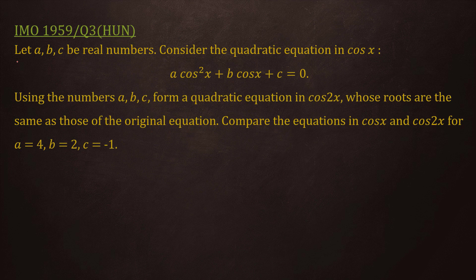This question was proposed by Hungary. The question is: given real numbers A, B, C, consider the quadratic equation in cos x — A cos²x + B cos x + C = 0. Using the numbers A, B, C, form a quadratic equation in cos 2x whose roots are the same as those of the original equation. Compare the equations in cos x and cos 2x for A = 4, B = 2, C = −1.